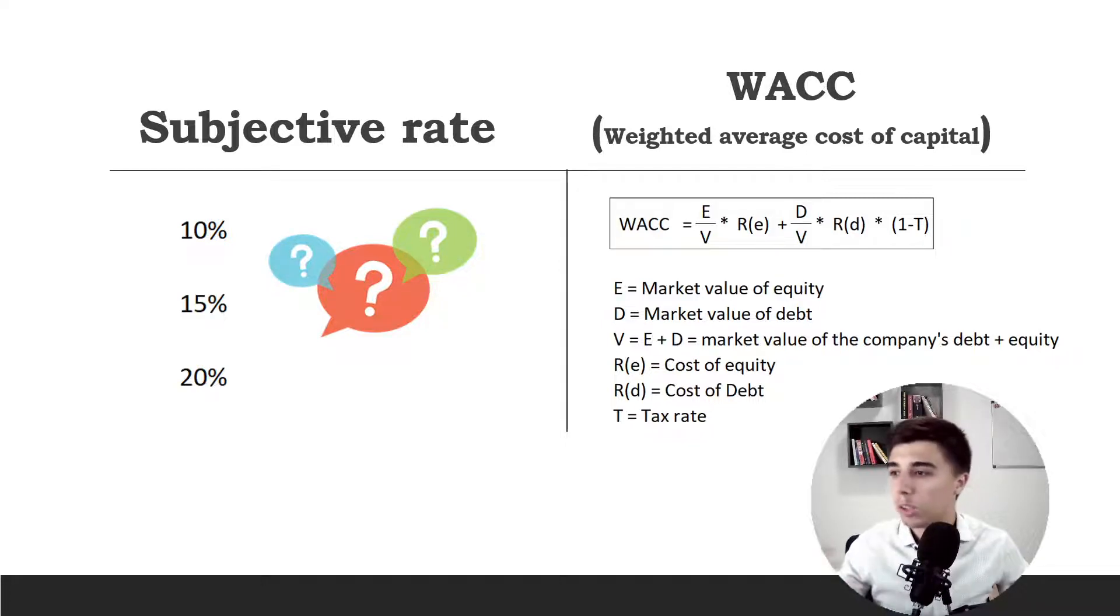If we take a look at the cost of equity, the way that's calculated—of course it takes the beta, it takes the volatility of the company. We have the different capital structure taken into account. So there are all of these factors.